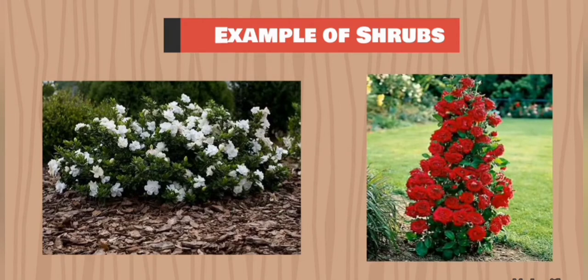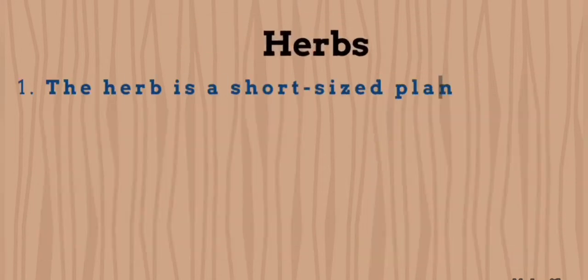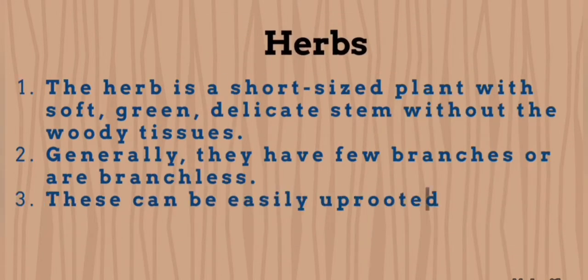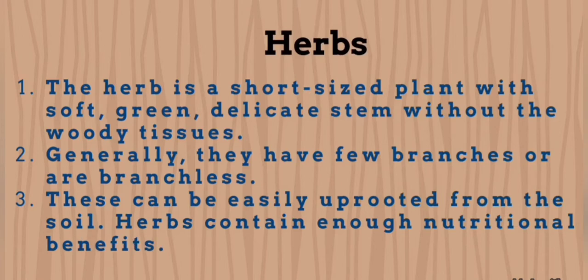Some beautiful flowers of shrubs are jasmine and rose. Now, herbs. A herb is a soft, short-sized plant with a green, delicate stem without woody tissues. Generally they have few branches, or are branchless too.